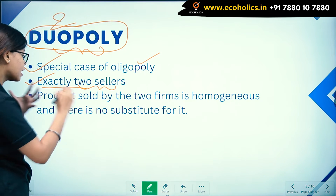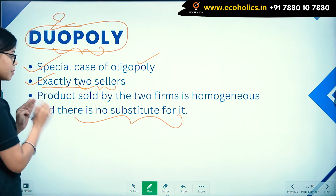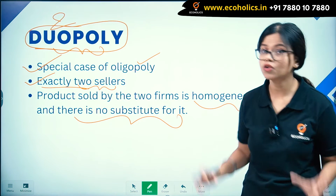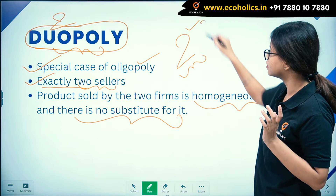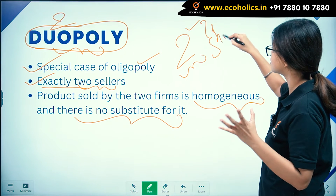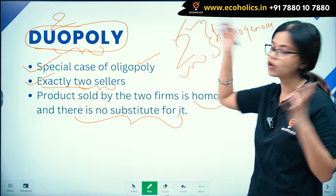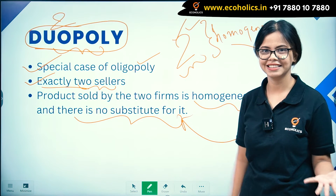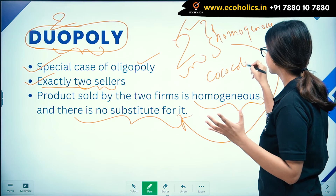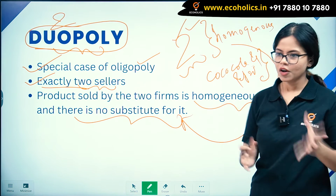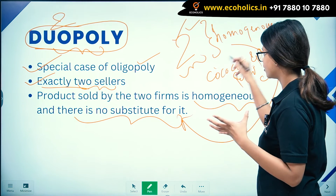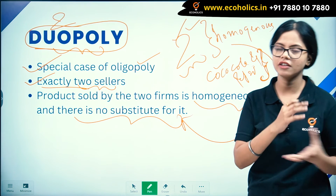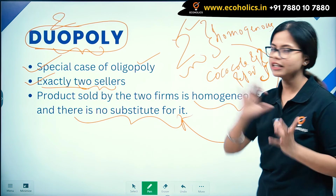In duopoly, the product sold by the two firms is homogeneous and there is no close substitute for it, since there are only two sellers in the market. A well-known example is Coca-Cola and Pepsi, which hold the major share in the cold beverage industry — selling the same homogeneous product with almost the entire market share between them. That completes our understanding of duopoly.